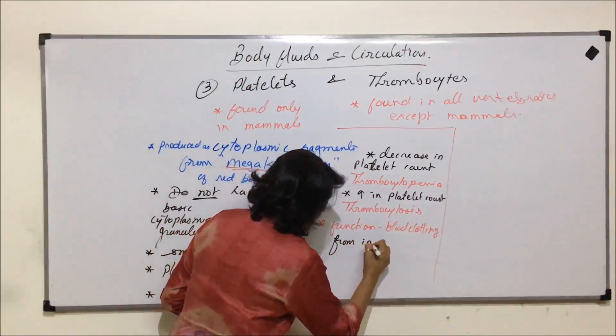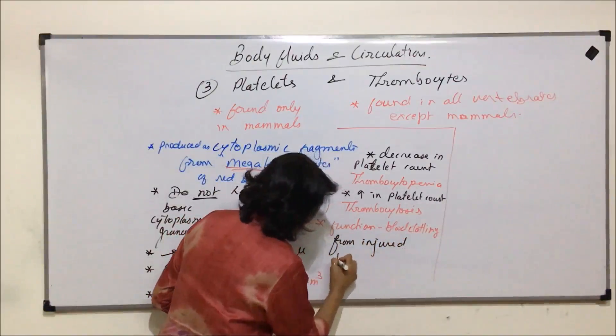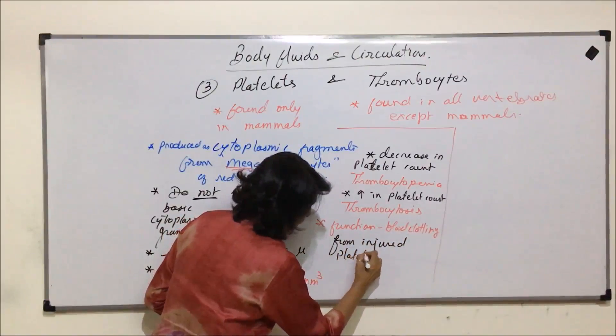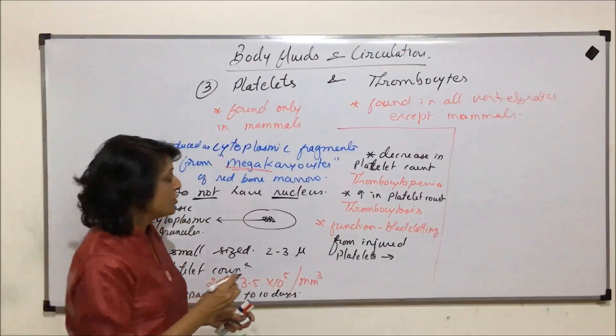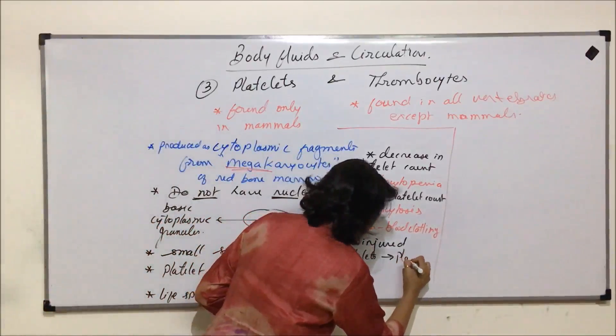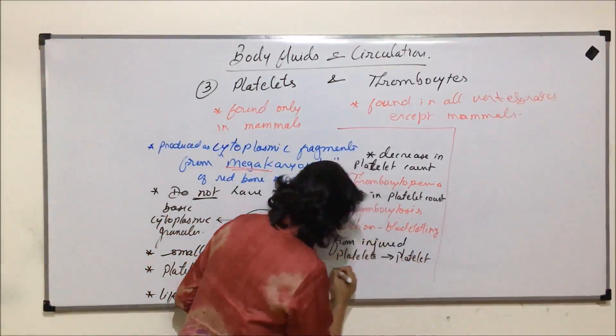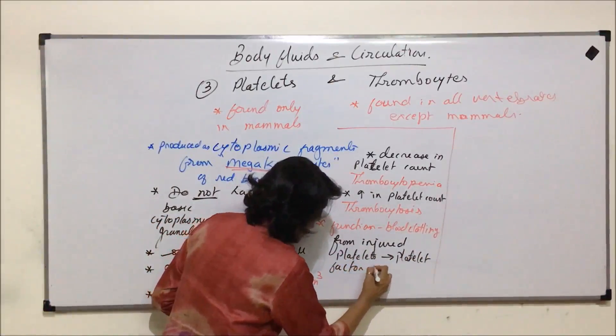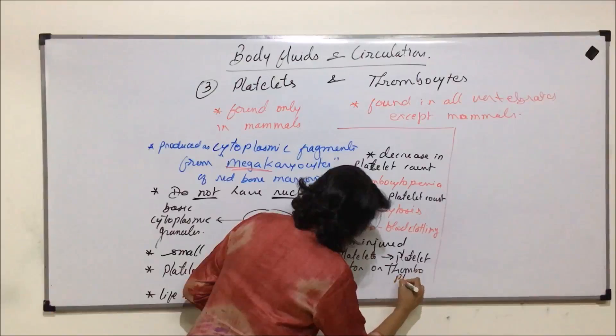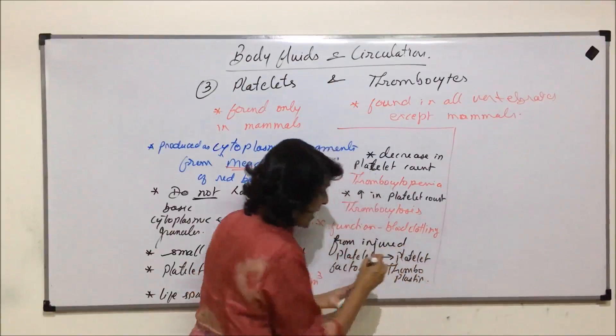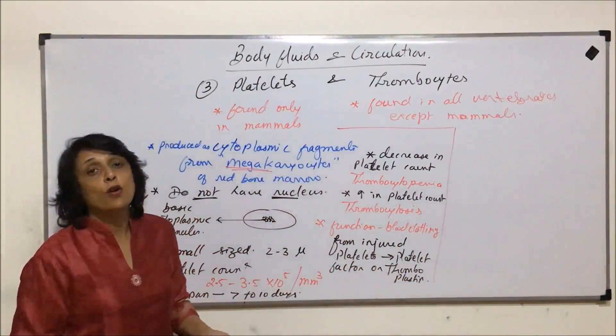So it is also known as platelet factor or injury factor. From injured platelets the substance which is released is known as platelet factor or thromboplastin, which is going to start the process of blood clotting.